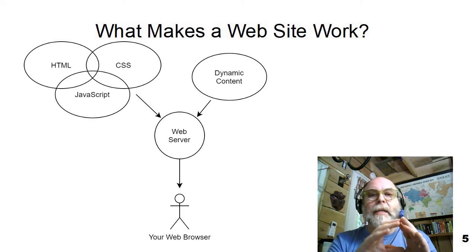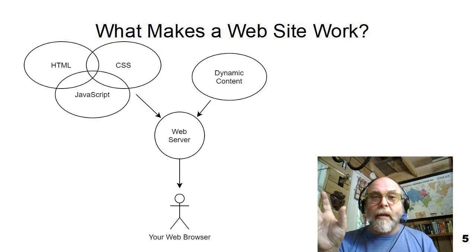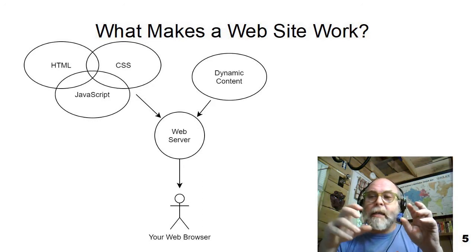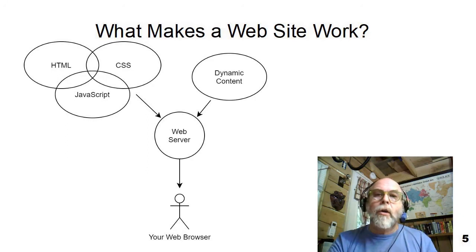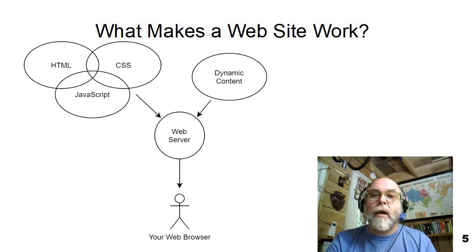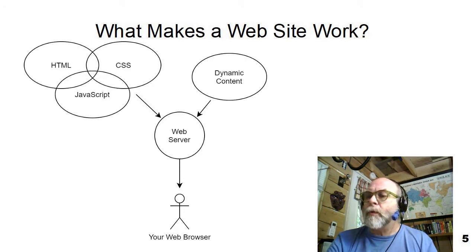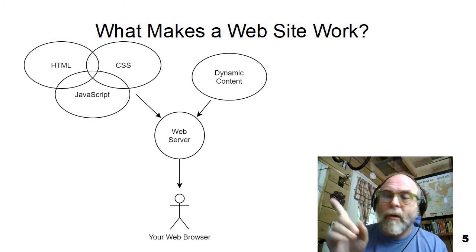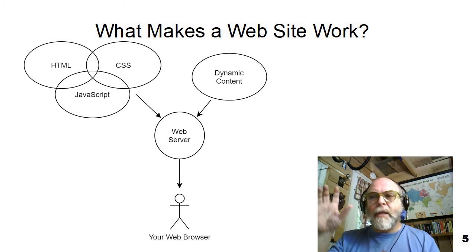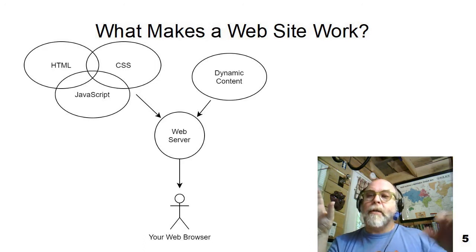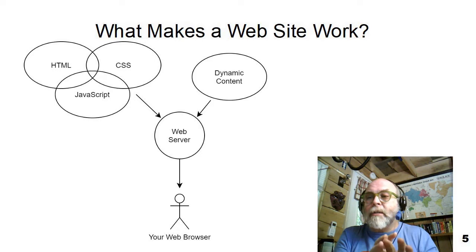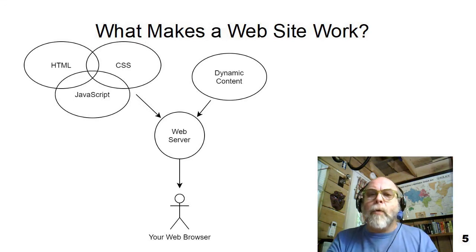The web server gets the static pages — the HTML, CSS, and JavaScript that you write and develop — along with the dynamic content. It uses a computer programming language on the web server, such as PHP, JavaScript, Java, or C, to bring it all together. The static content you create and the dynamic content from the databases are all brought together on the web server and delivered to the web browser.